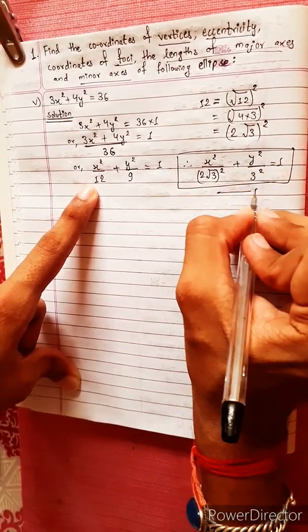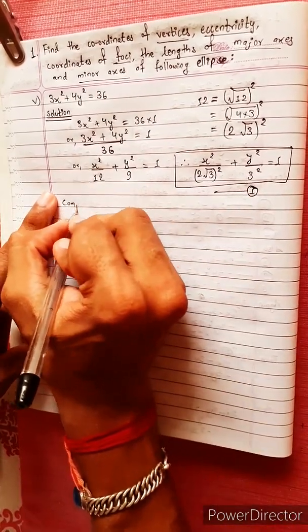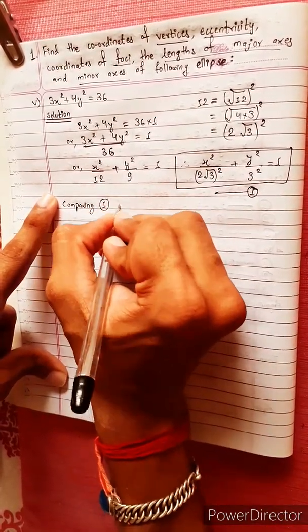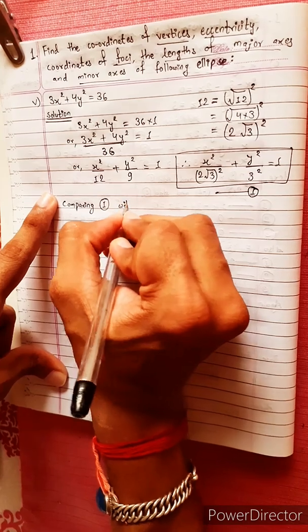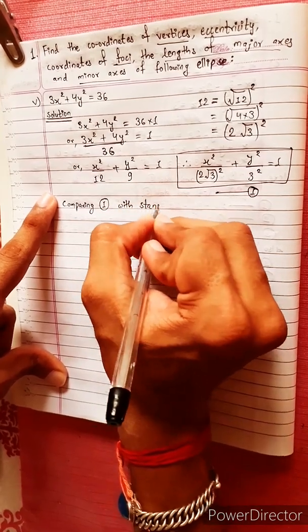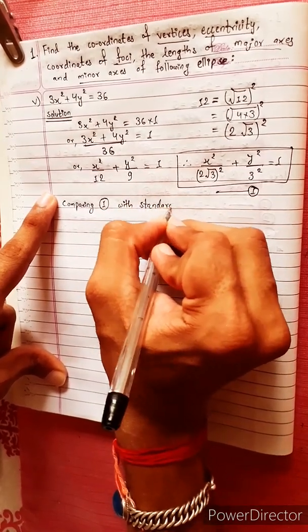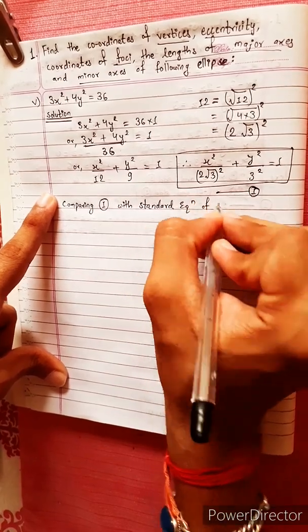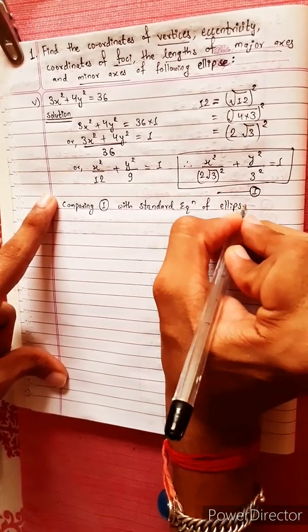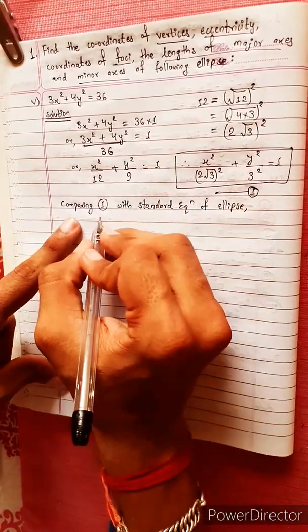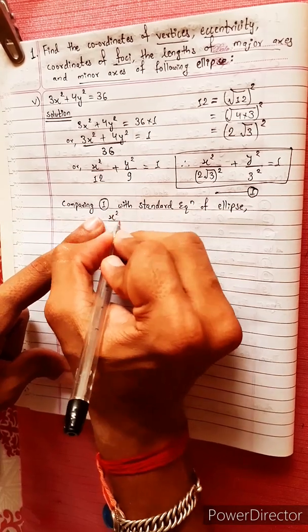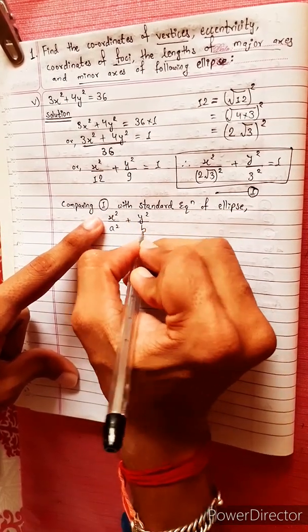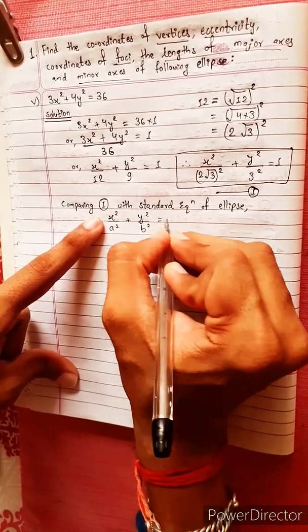Let's take a look at equation 1 and compare it to the standard form. What is the standard equation of an ellipse? The standard equation of an ellipse is x²/a² plus y²/b² equals 1.